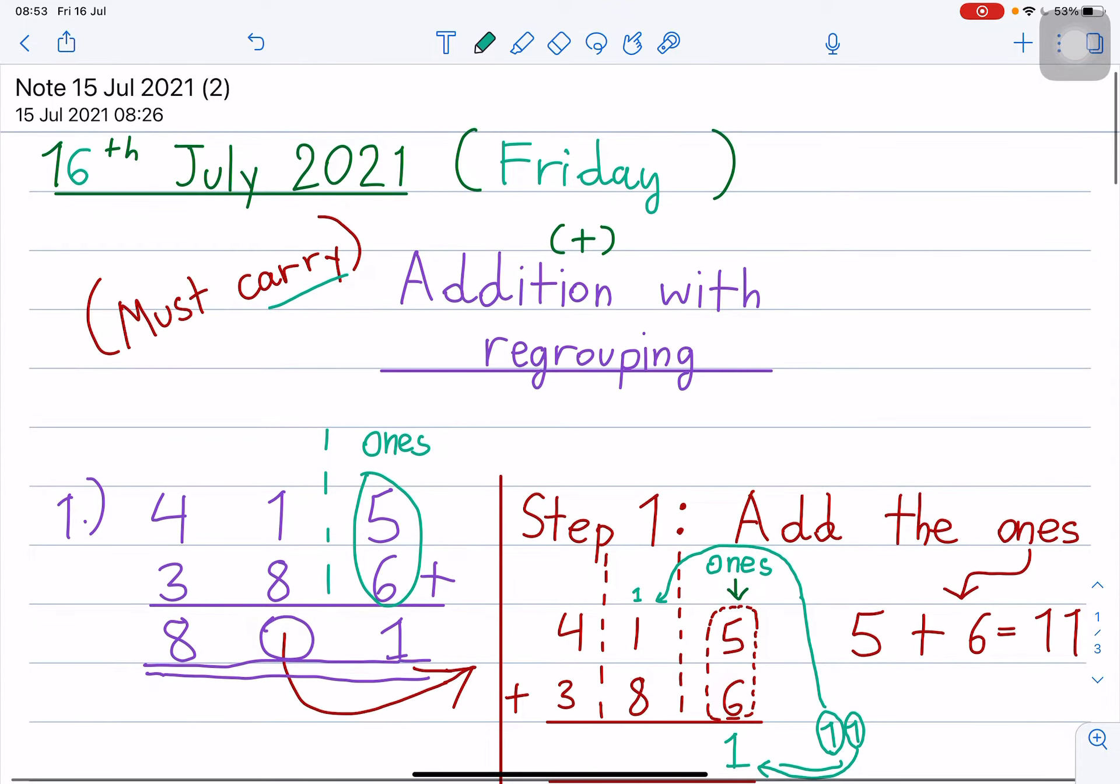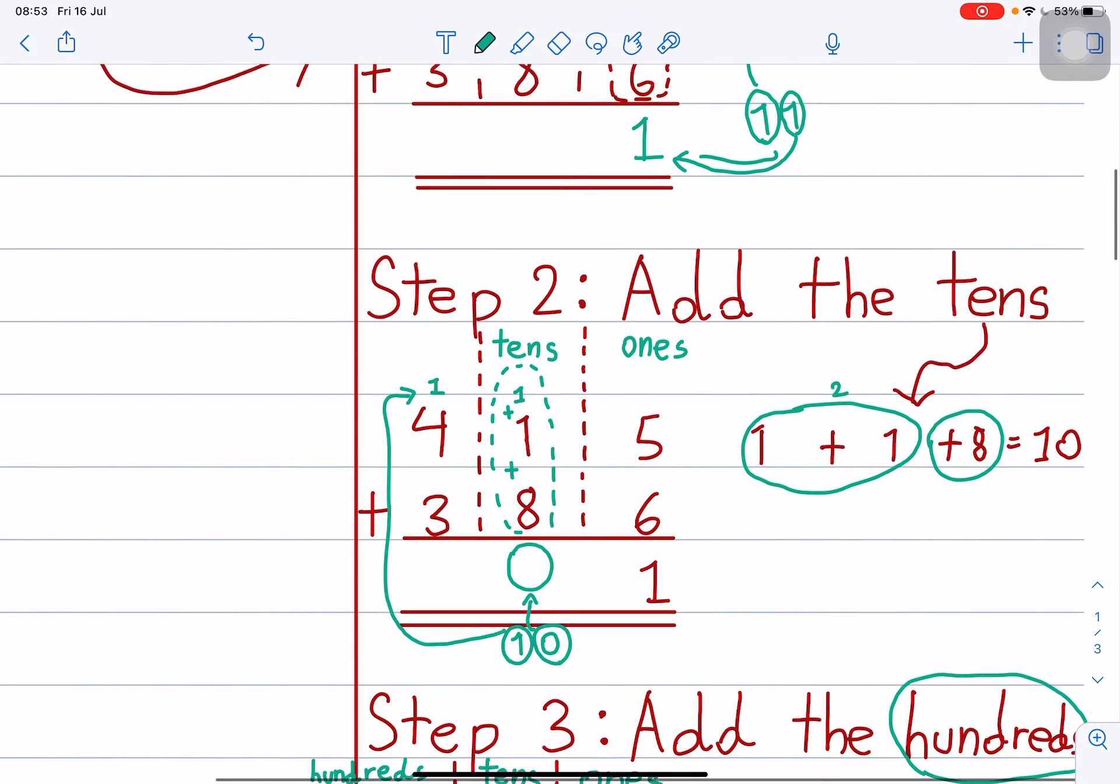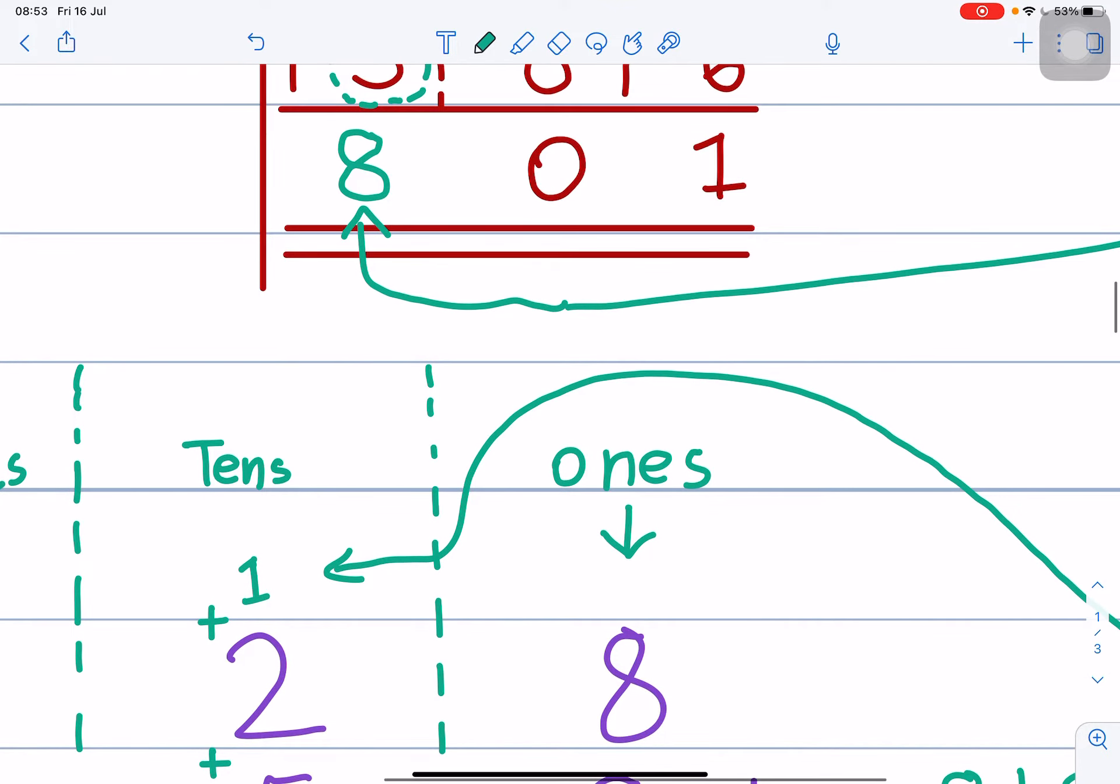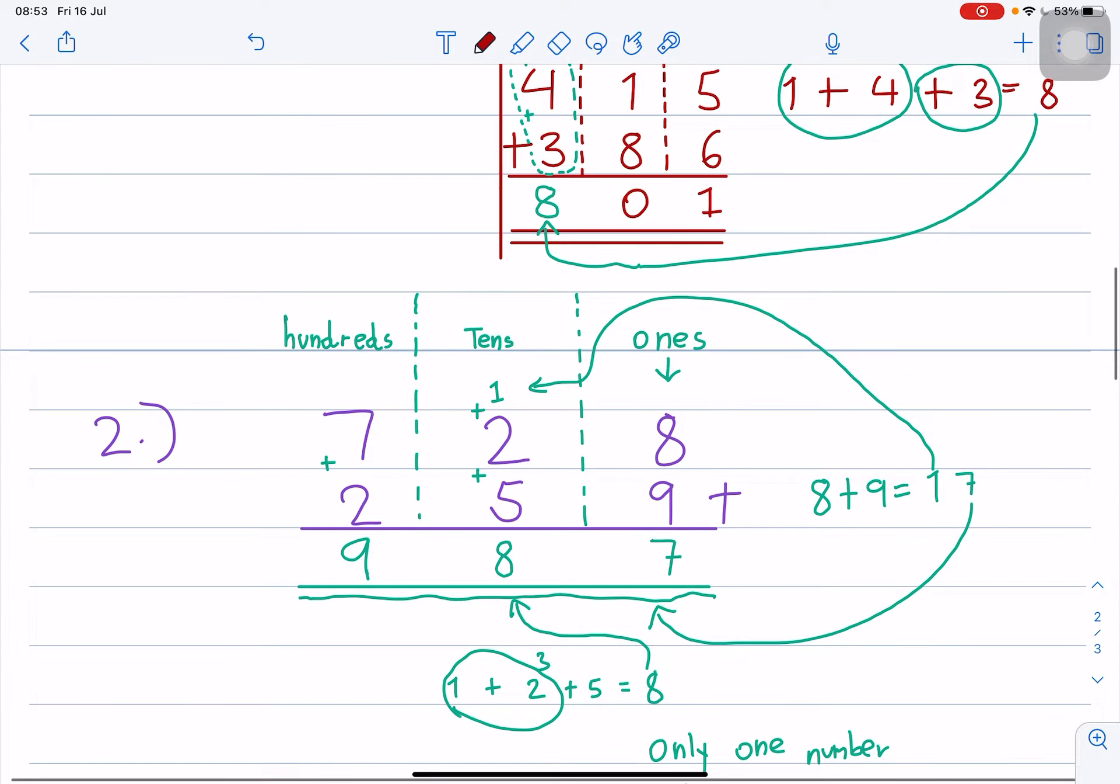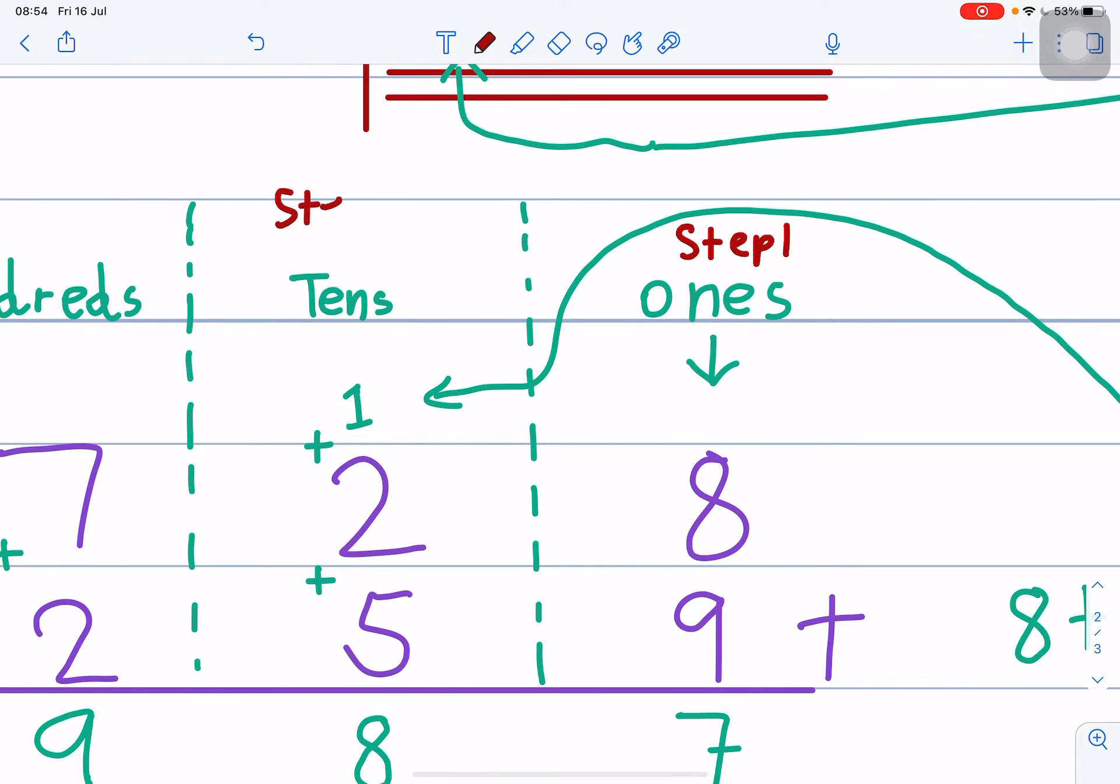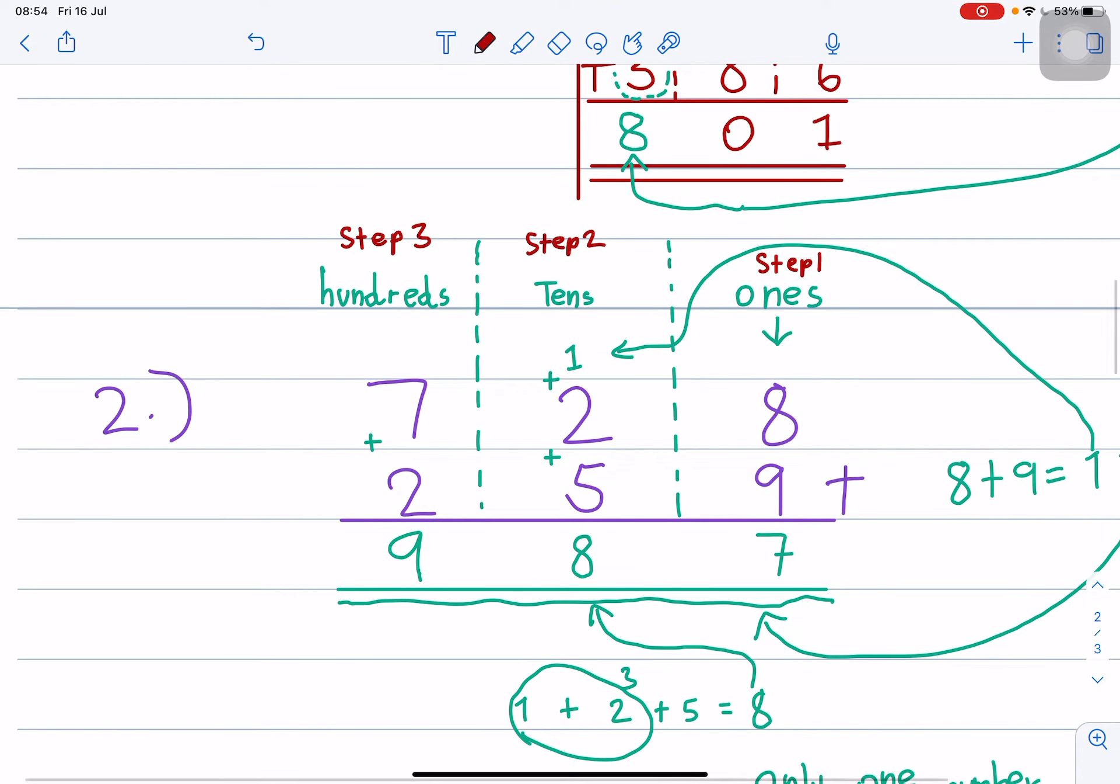So addition with regrouping, meaning addition if you carry, you must do 3 steps: step one, step two, step three. For example number two: 728 plus 259. Step one, step two, step three. You understood, right? Very good.